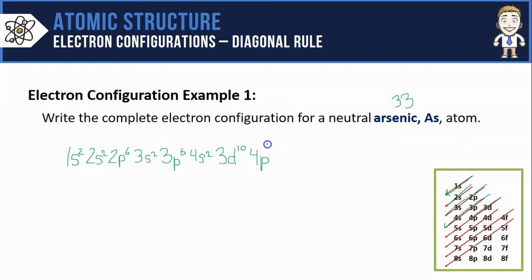So that means my p orbitals, which could hold 6, don't have to. They only have to hold 3 electrons to get up to the total of 33, making this my final complete electron configuration for a neutral arsenic atom.